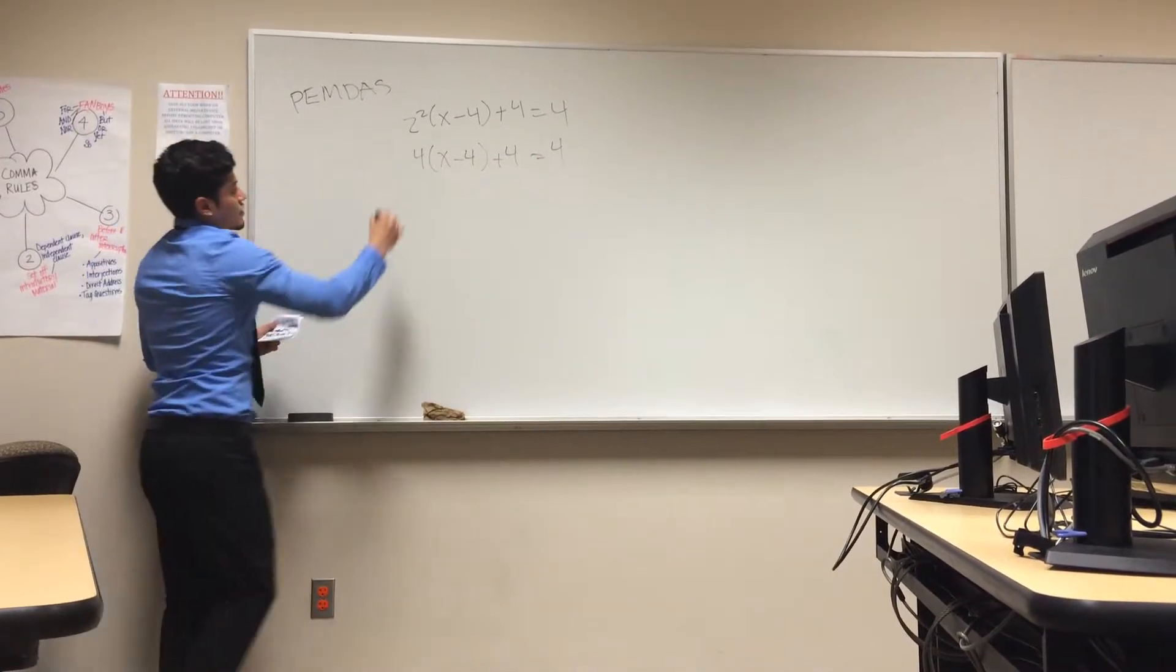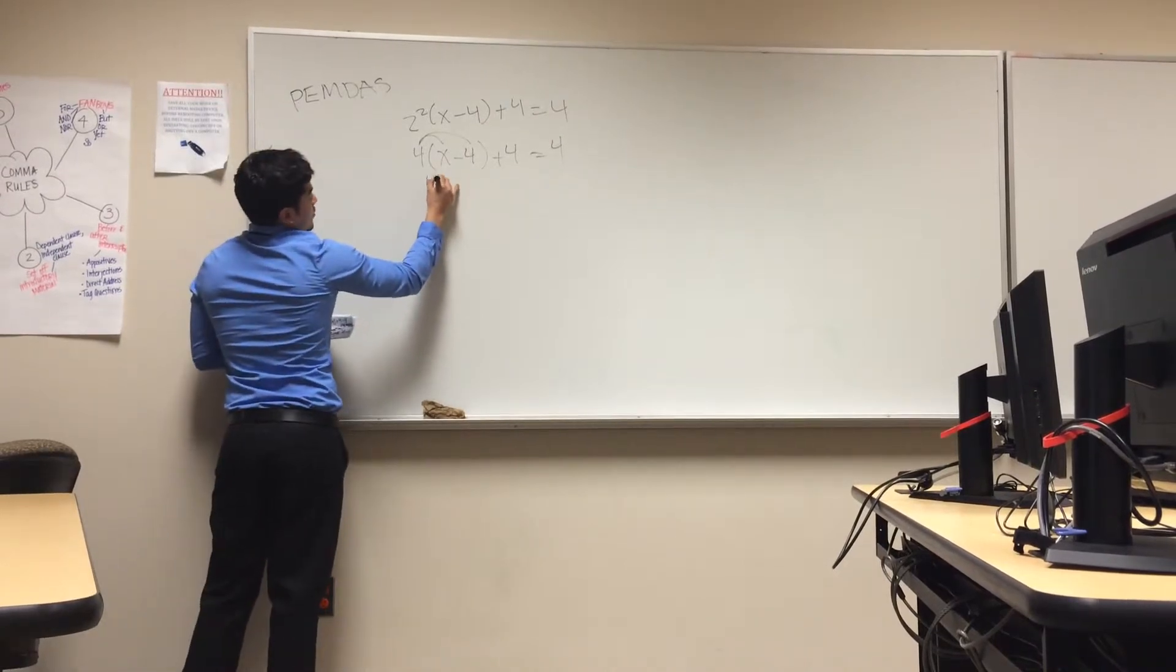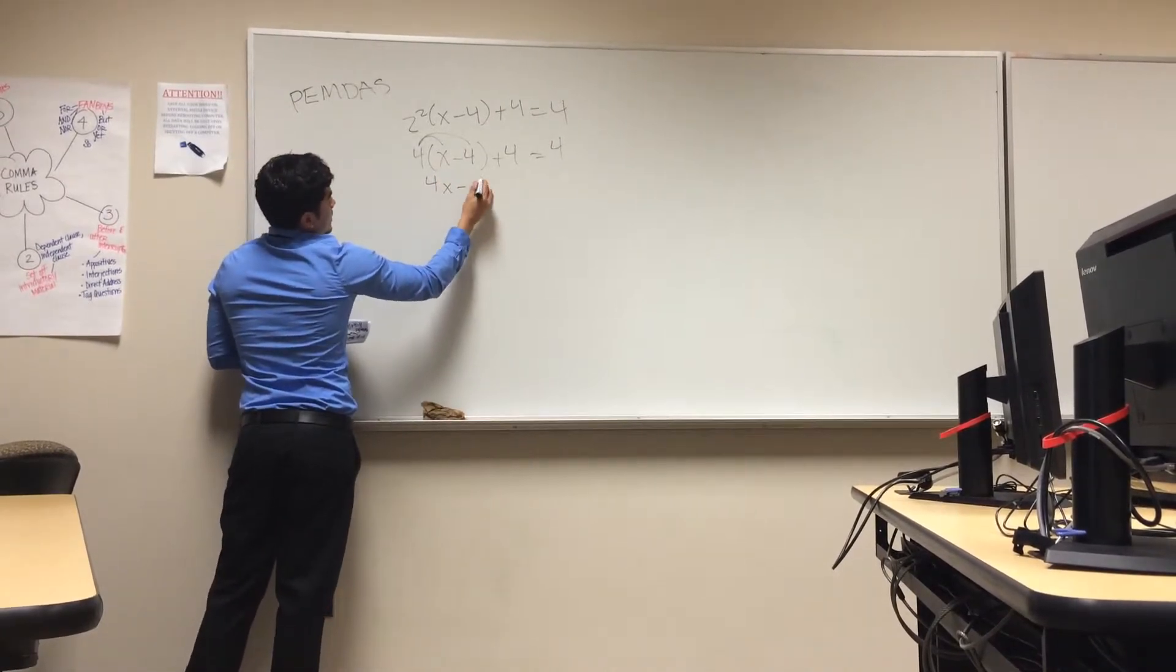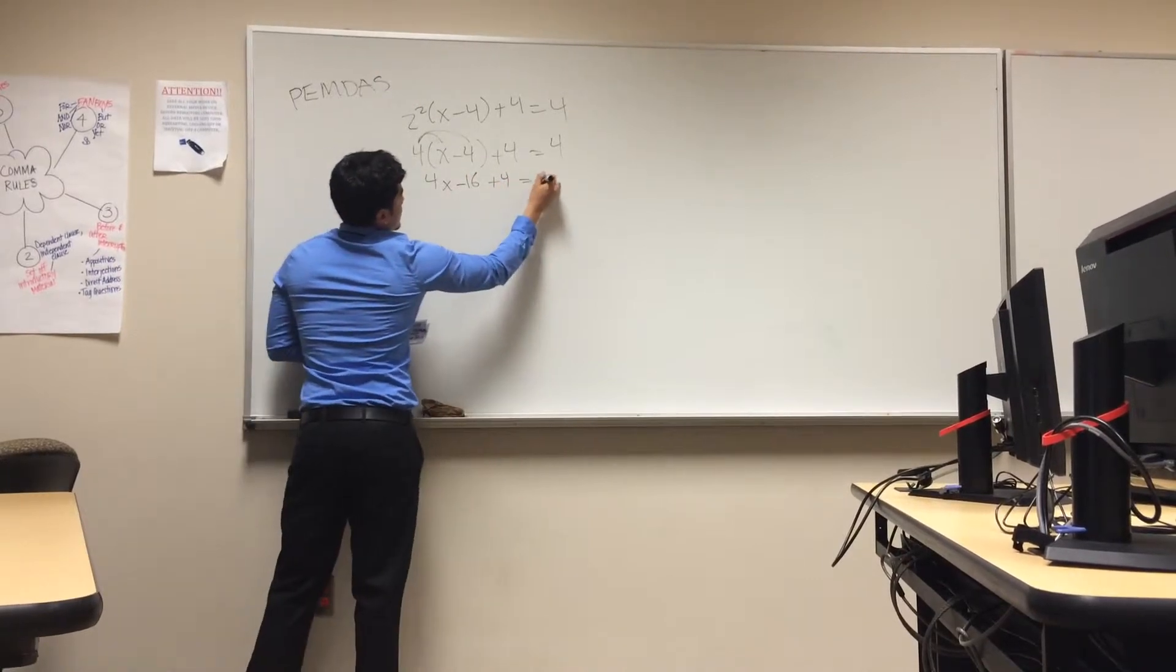After this, you have to distribute the 4 inside the parentheses. So, it would be 4x minus 16 plus 4 equals 4.